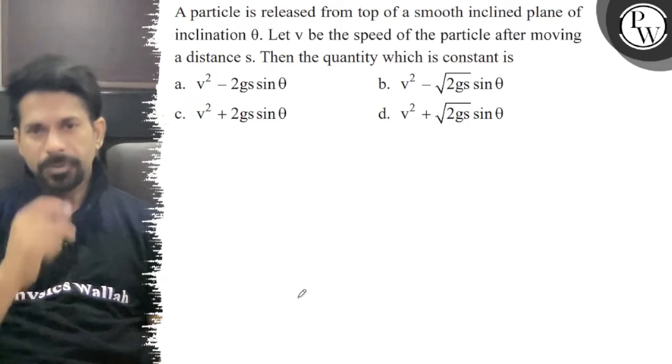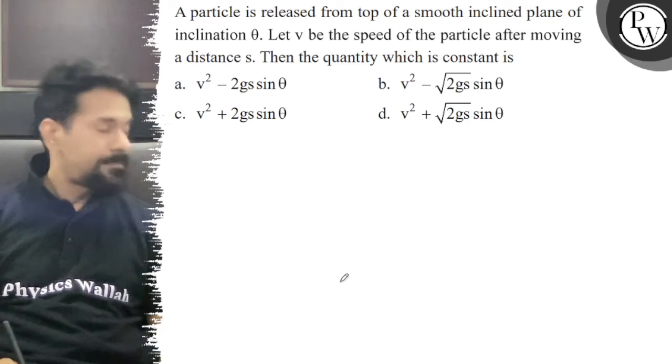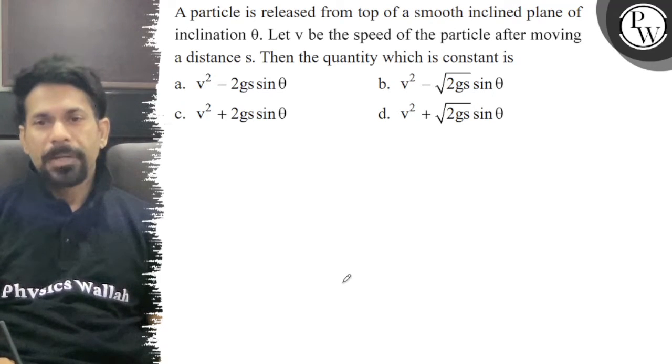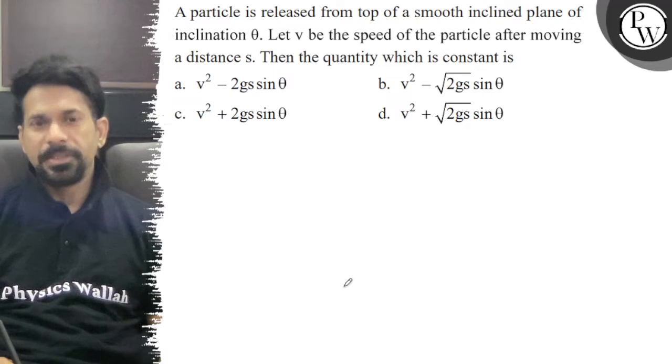Let's see the question. A particle is released from the top of a smooth inclined plane of inclination theta. Let v be the speed of the particle after moving distance s. Then the quantity which is constant is.